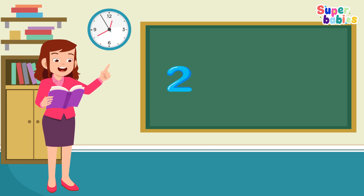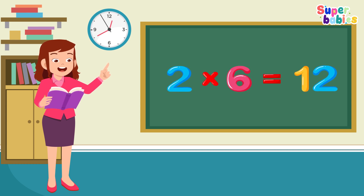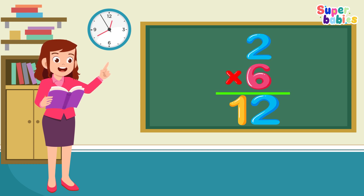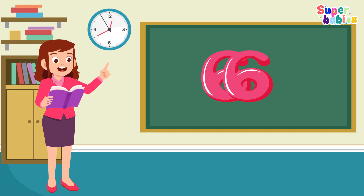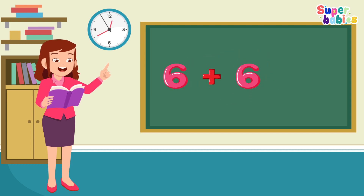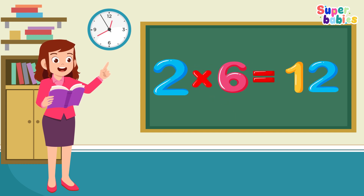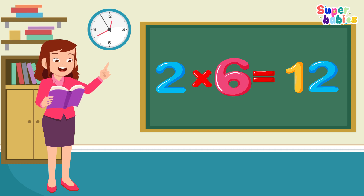Two times six equals twelve. Two, six equals twelve. One, two, six equals twelve. Two times six equals twelve.